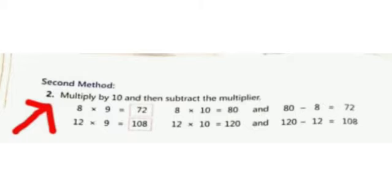You can see here that number 8 multiplied by 9 is equal to 72. So first we will multiply 8 and 10. We will get 80 and now 80 minus 8, we have to subtract the multiplier, so we will get 72. Now 12 multiplied by 9 is equal to 108. 12 times 10 is 120 and 120 minus 12 is equal to 108.